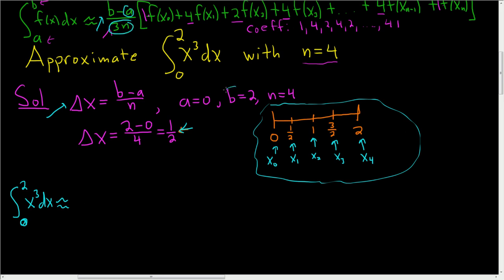So b for us is 2. So 2 minus 0. So 2 over, and then 3n. Well, n is 4. So 3 times 4 is 12. Yep, it sure is. So it's 2 over 12. Then we have the bracket. Now we have to write down f of x sub 0. Well, in this problem, f of x is x cubed, right? That's the integrand. So f of 0, I'll actually write it, f of 0.